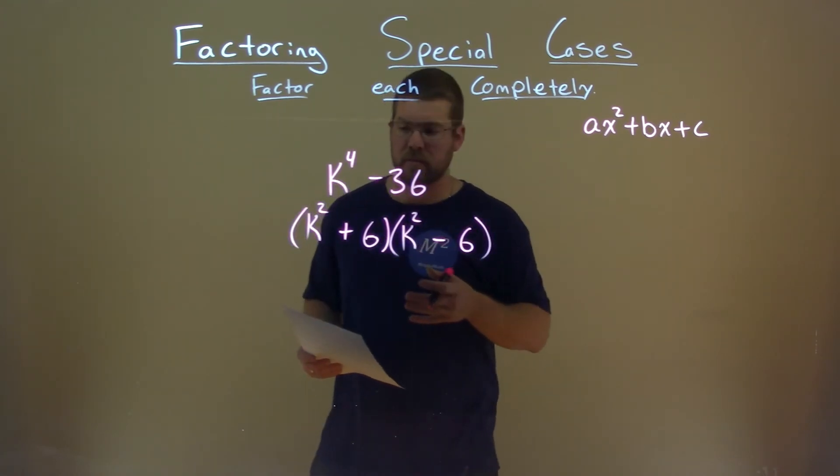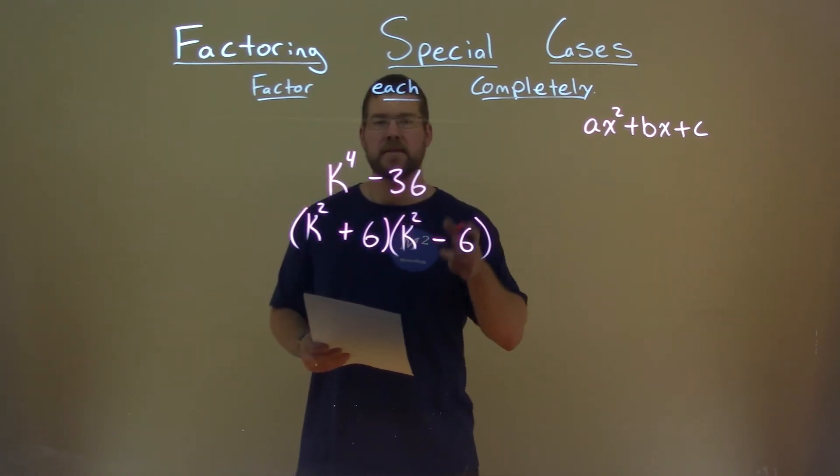So we have our answer: k squared plus 6 times k squared minus 6.